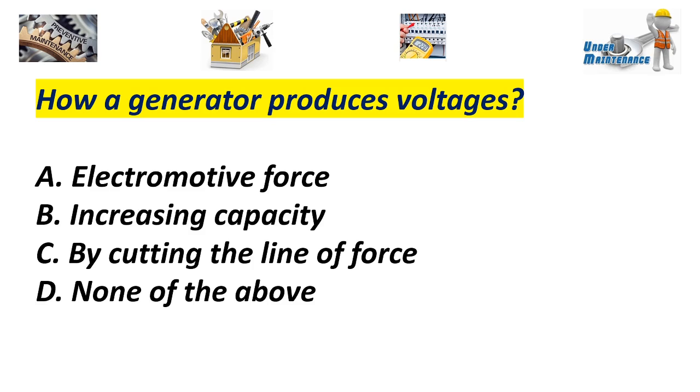How a generator produces voltage? A. Electromotive force. B. Increasing capacity. C. By cutting the line of force. D. None of the above. Answer C. By cutting the line of force.